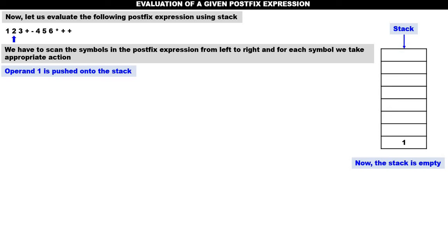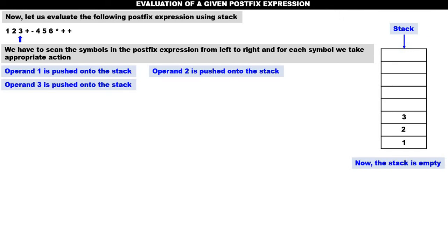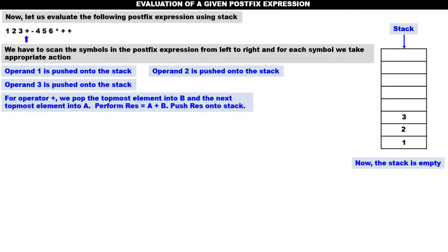Next symbol, two. Two is an operand, so push it onto the stack. Two is also pushed. Next symbol, three. Three is an operand — push it onto the stack. Three is also pushed. Next symbol, plus. Now carefully understand — for the first time we are getting an operator. For operator plus, we pop the topmost element into B, and the next topmost element into A. Then we perform RES = A + B, and push RES onto the stack.